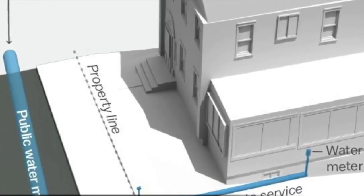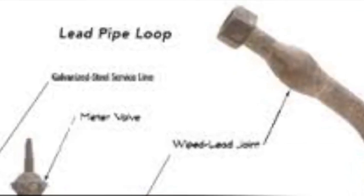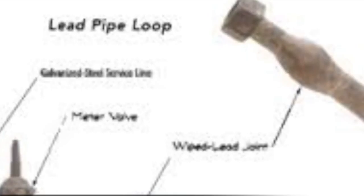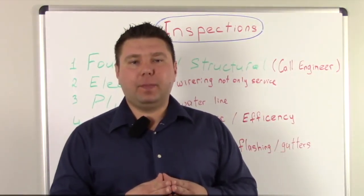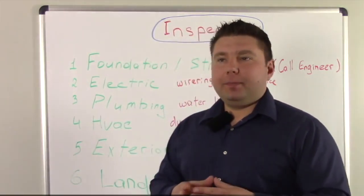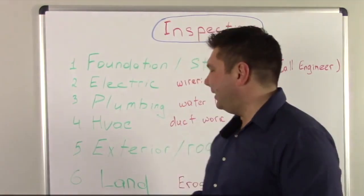And the last and most important part, the main line going towards the house. Lots of Pittsburgh houses have lead pipe and I don't have to explain that water running through lead pipes is not appropriate for drinking. If you find a lead pipe just add another ten thousand for replacing the main line coming in.